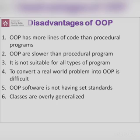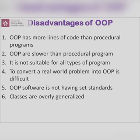To highlight the main disadvantages: first, OAPs has more lines of code than procedural programs; second, OAPs are slower than procedural programs; third, it is not suitable for all types of programs; fourth, converting a real-world problem into OAPs is difficult; fifth, OAPs software does not have set standards; sixth, classes are overly generalized.